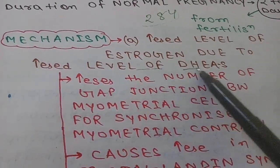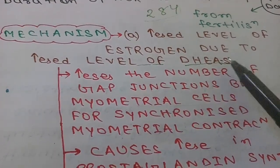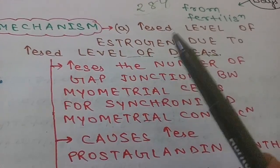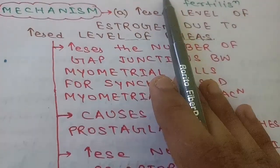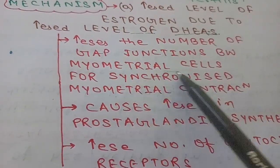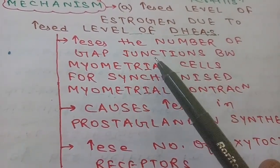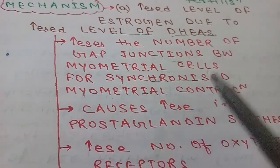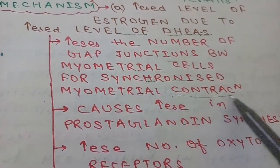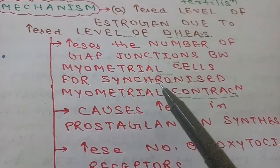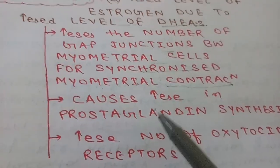What are the effects of estrogen after increasing its level? The first effect is the increase in number of gap junctions between myometrial cells. If there is an increase in number of gap junctions, there will be synchronization between myometrial contractions. So the first effect is synchronized myometrial contraction.